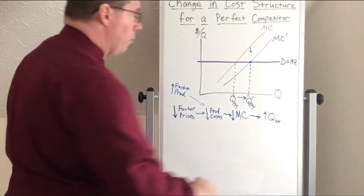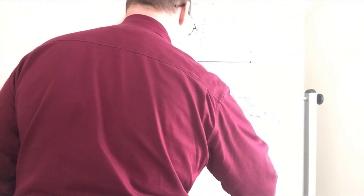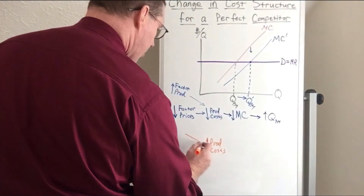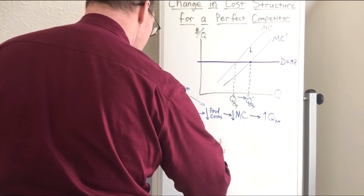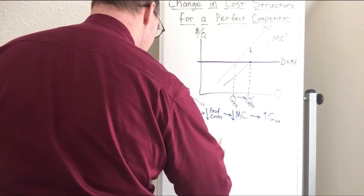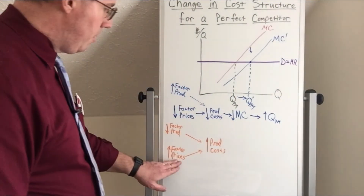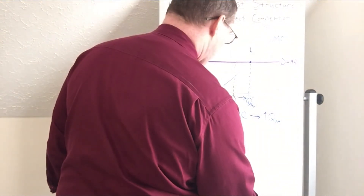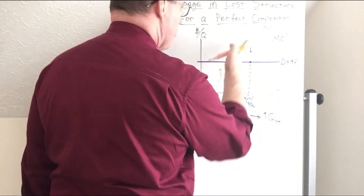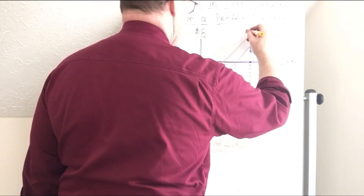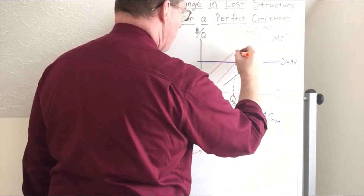Now let's talk about what happens when there is an increase in costs. Production costs increase under two possible circumstances: a decrease in factor productivity or an increase in factor prices. So if wages go up or the cost of capital goes up, this firm will have an increase in production costs. An increase in production costs leads to an increase in marginal costs — an upward shift of the marginal cost curve. It's going to shift upward, and we'll label that MC double prime.